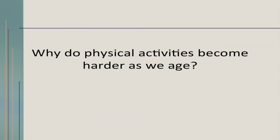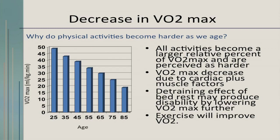Physical activity becomes a bit harder as we get older — that's because there's a decrease in your VO2 max. All activities become a larger relative percent of the VO2 max and you perceive them as harder. This VO2 max decreases due to cardiac plus muscle factors. Not exercising for a while may lower your VO2 max further, though if you exercise, you'll improve it. Looking at that linear decline, all of that occurs and it's all correct.